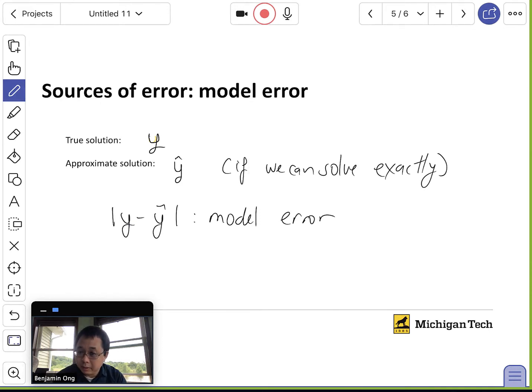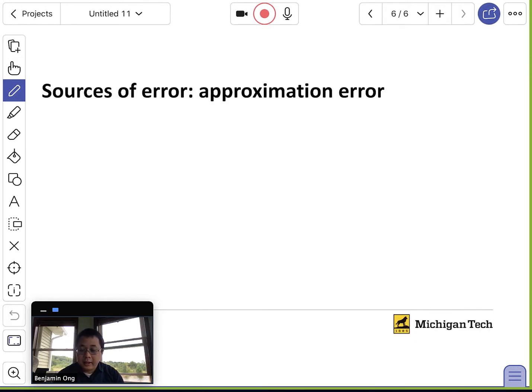In scientific computing, there is an additional problem. It is often not possible to compute Y hat exactly. So we have to approximate it. So let me give you a more specific example now. And this is something that we're going to refer to as approximation error.